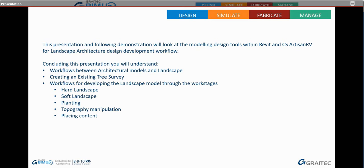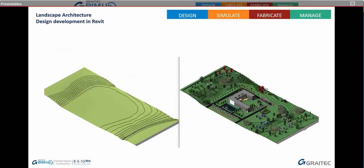This presentation and accompanying demonstrations will look at the modelling design tools within Revit, accompanied by CS Artisan and Harvey for landscape architecture design development workflows. You will understand workflows between architecture models and landscape, creating an existing tree survey, and then workflows for developing the landscape model through stages including hard landscape, soft landscape, planting, topographical manipulation and placing content. The aim is to take a model from an existing survey topography to a fully developed landscape design.